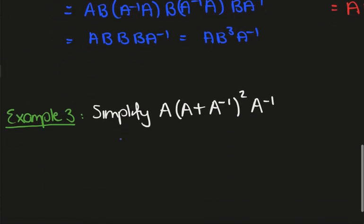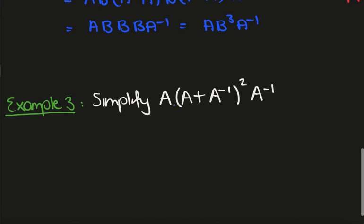Okay, let's look at the last example. Simplify A times A plus A inverse squared times A inverse. So again we have to write it out because matrix multiplication is not commutative.